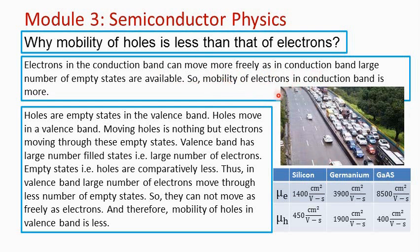We can visualize this like the road on the left side — an empty road with a small number of vehicles. So vehicles can attain more speed. In the same way, electrons moving in the conduction band, where a large number of empty states are available, can move more freely and therefore can achieve more speed.